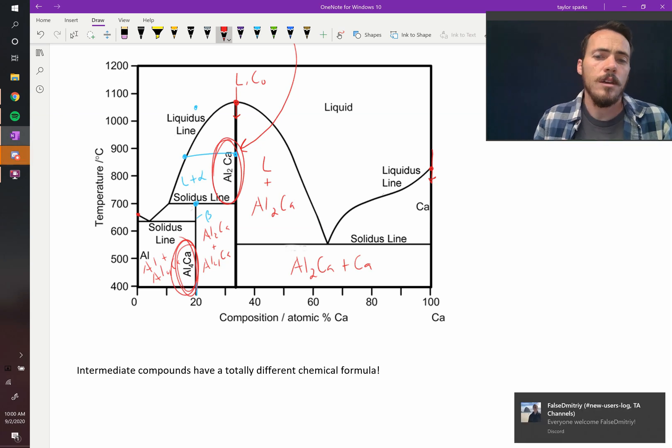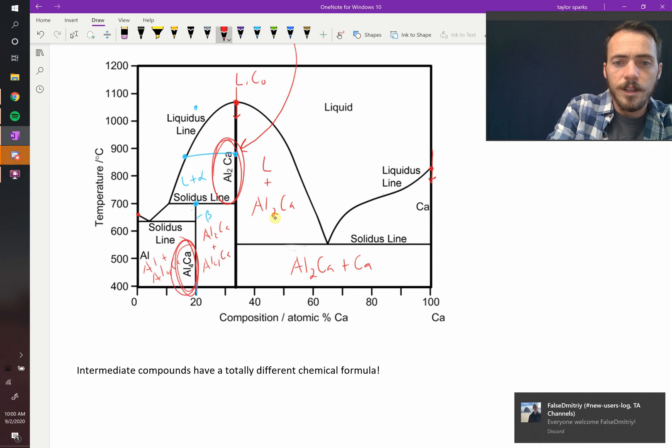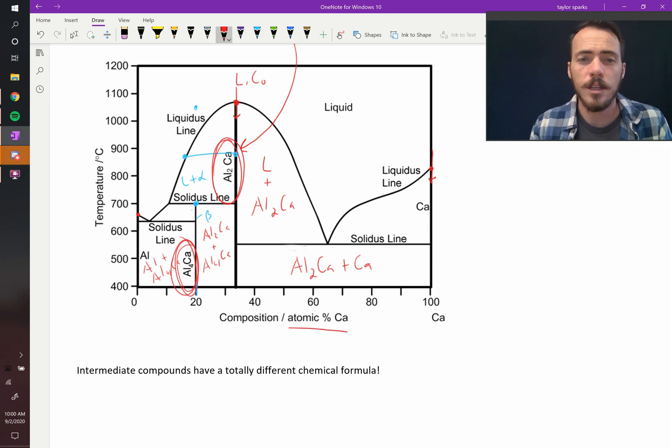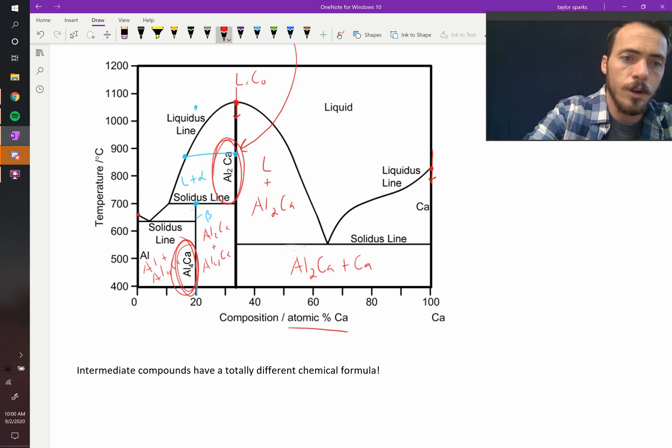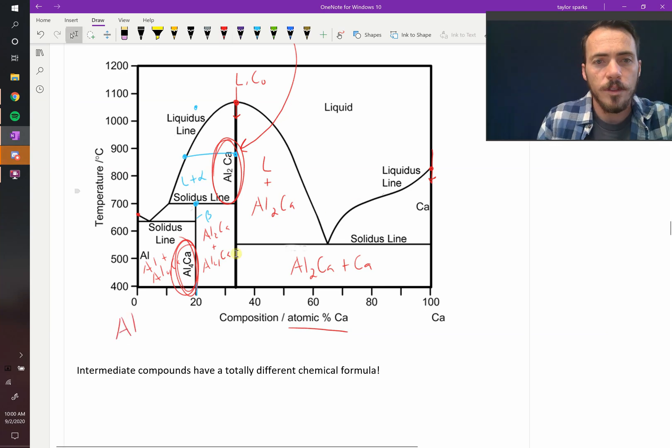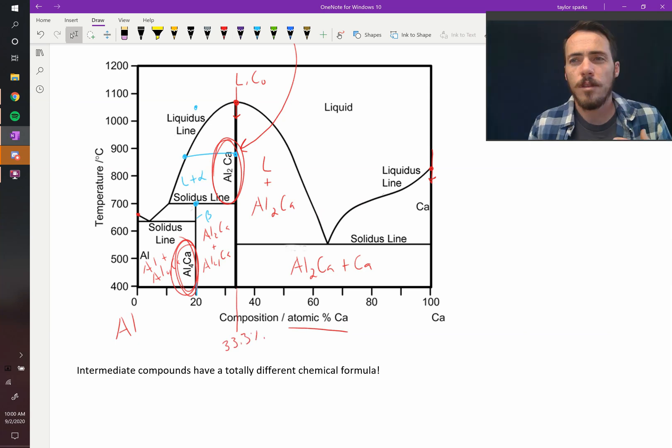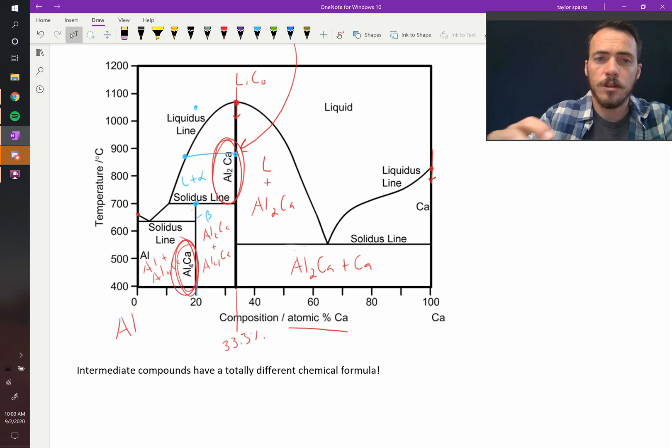So if the plot is given in a really simple way, like atomic percent, that makes calculating the formula really easy. Because as it goes from pure aluminum over here to pure calcium, what this is telling us is that at 33.3%, one-third of the atoms are calcium. Therefore, two-thirds are aluminum.